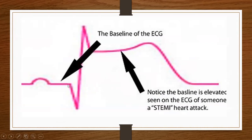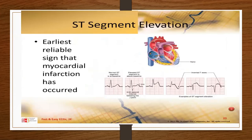Here is the person's baseline EKG, and if they're having a heart attack, look how far that baseline is elevated — that's what's called the STEMI that you see on the EKG. It's very important that you have those leads placed in the right place, because that person can be experiencing a heart attack and if your leads are in the wrong place you may miss that image on the EKG. The ST elevation is usually the earliest reliable sign of a myocardial infarction.